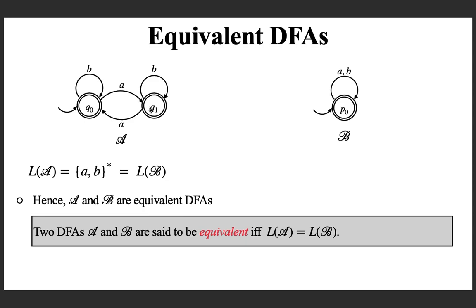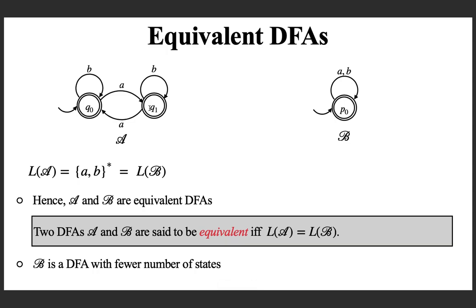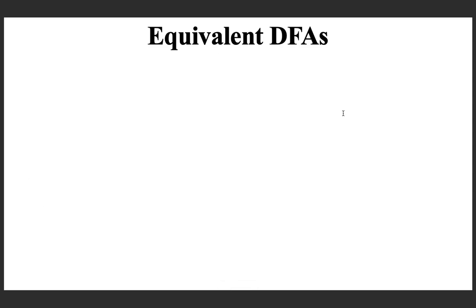Two DFAs A and B are said to be equivalent if and only if their languages are the same. If the languages are the same, they are equivalent, and if they are equivalent, then the languages must be the same. Note that DFA B has a fewer number of states. In this case, this is going to be the minimal state DFA. You cannot have a DFA without any states.